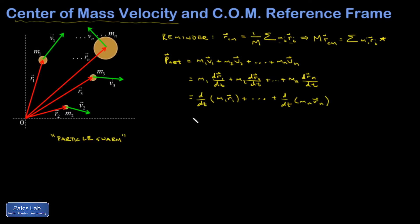But the derivative of a sum is the sum of the derivatives. In other words, I could just write this all as the time derivative of m1, r1 plus dot dot dot plus mn, rn. And I recognize that from our little reminder at the beginning, as the entire mass multiplied by the center of mass position. So entire mass times center of mass position.